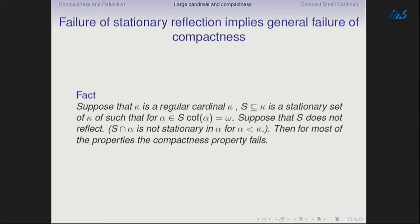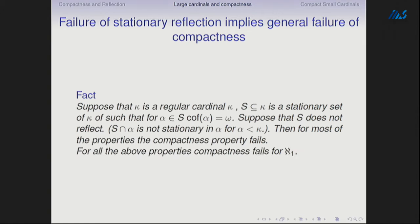Supercompactness gives us reflection or compactness for everything. Now, stationary reflection failure is in some sense the worst failure of reflection. Especially a failure of stationary reflection for a stationary set of points of cofinality ω: suppose κ is a regular cardinal and you have a stationary set S ⊂ κ where every α ∈ S has cofinality ω, and suppose S does not reflect — meaning S ∩ α is not stationary in α for every α < κ. Then for most of the properties listed, the compactness properties fail for κ. You can generate from a non-reflecting stationary set many counterexamples to compactness.